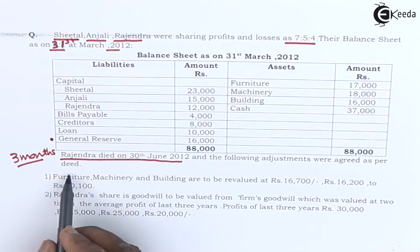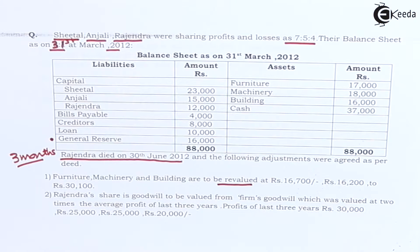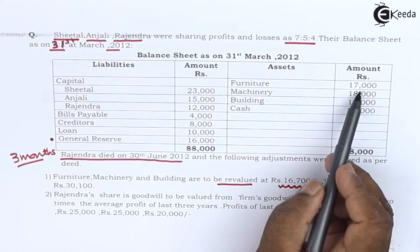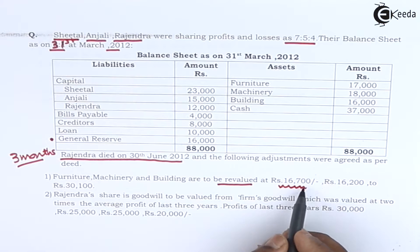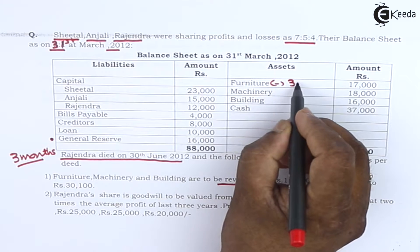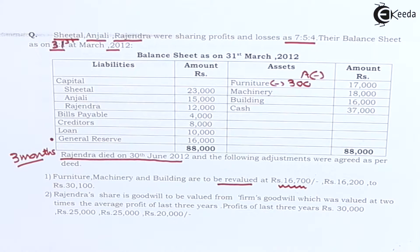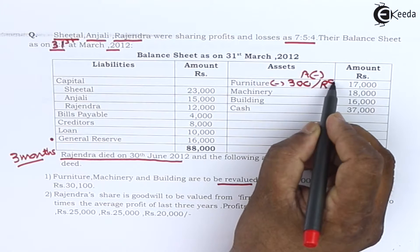As per the deed, furniture, machinery, and building are to be revalued. Furniture's new value is 16,700, whereas the book value is 17,000 — that means the value of furniture has decreased by 300. This is a loss for the firm; therefore it will be debited to the profit and loss adjustment account or revaluation account.